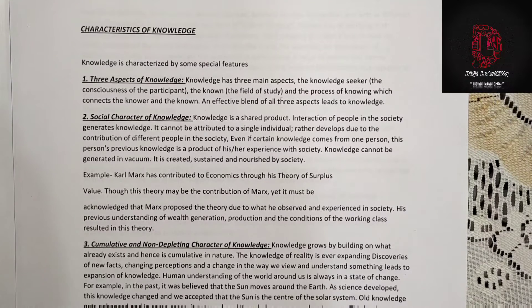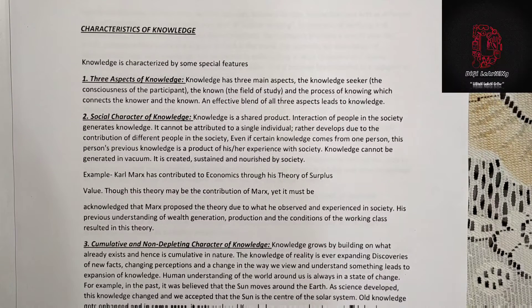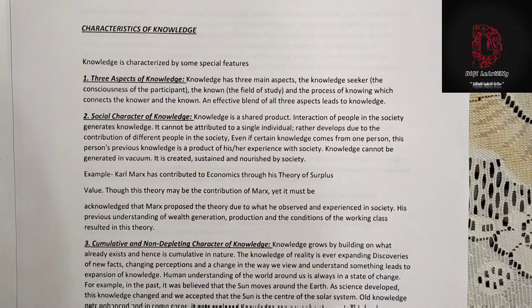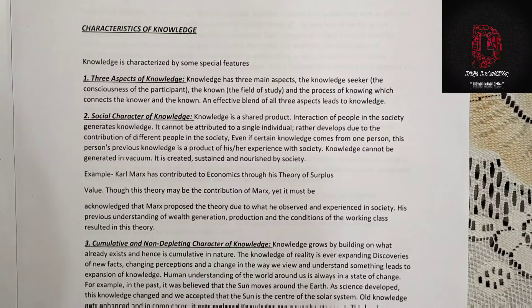The second characteristic is the social character of knowledge. Knowledge is a shared product. Interaction of people in society generates knowledge — it cannot be attributed to a single individual but develops due to the contribution of different people in society. Even if certain knowledge comes from one person, that person's previous knowledge is a product of their experience with society. Knowledge cannot be generated in a vacuum; it is created, sustained, and nourished by society.